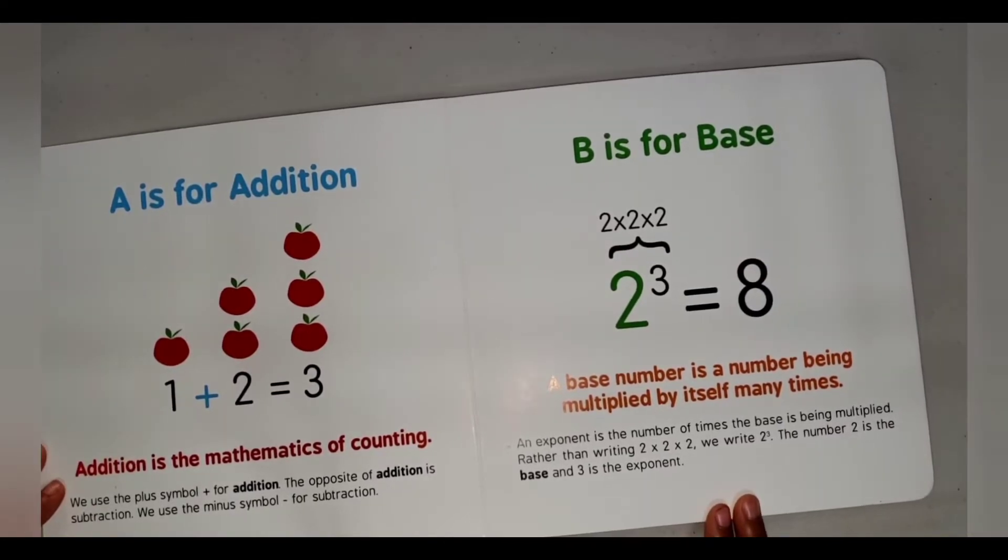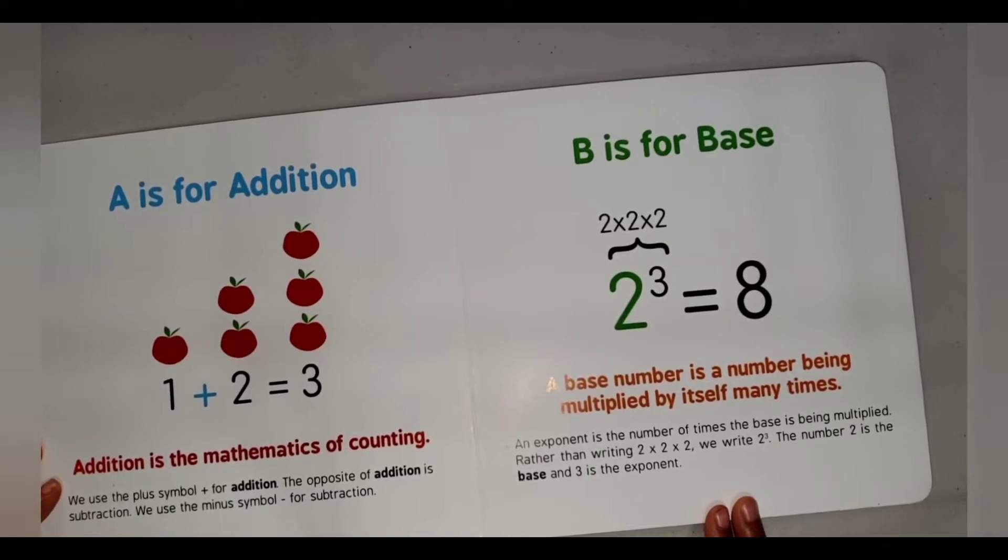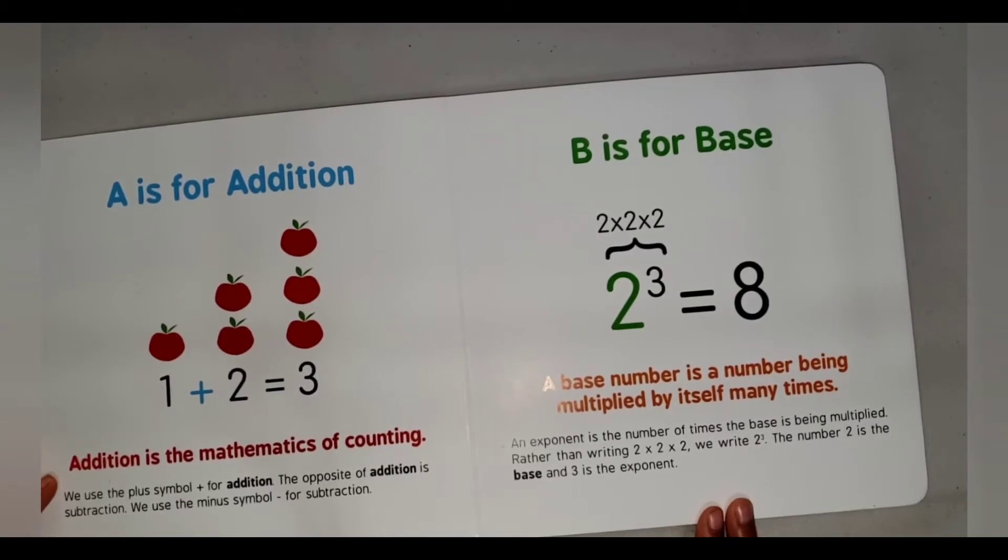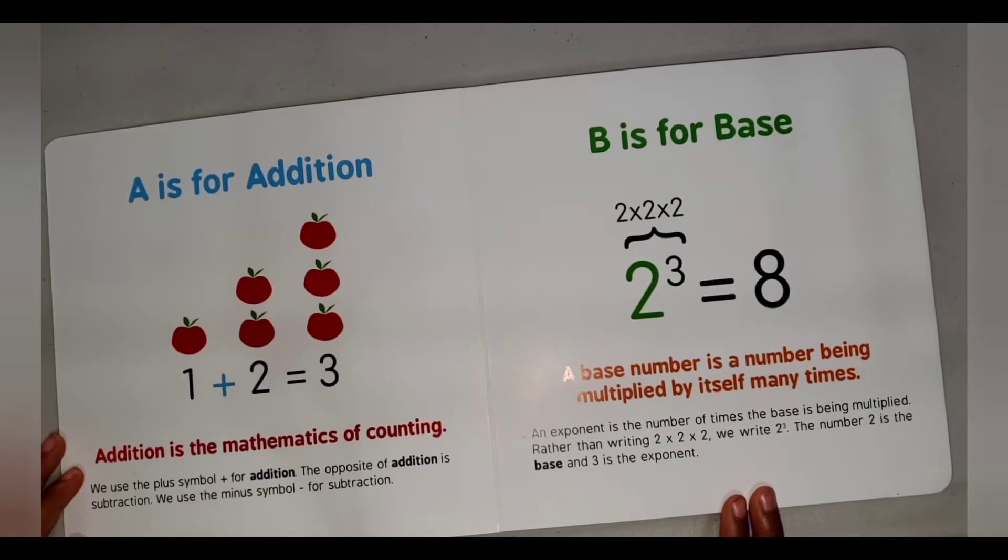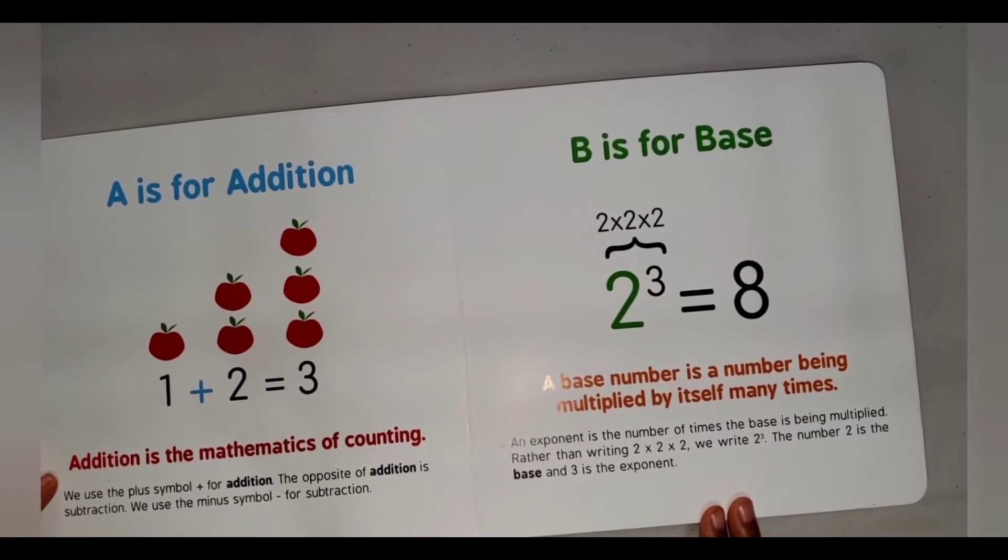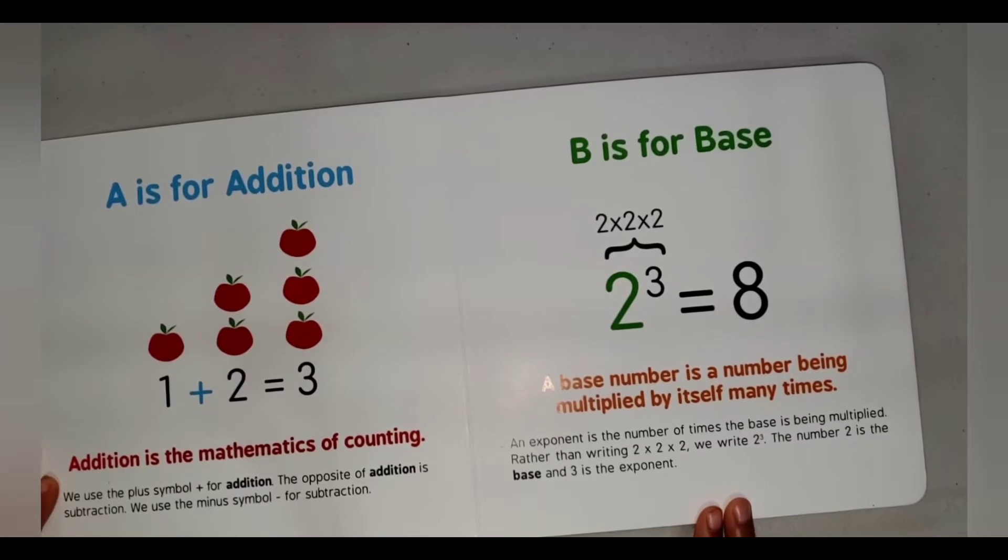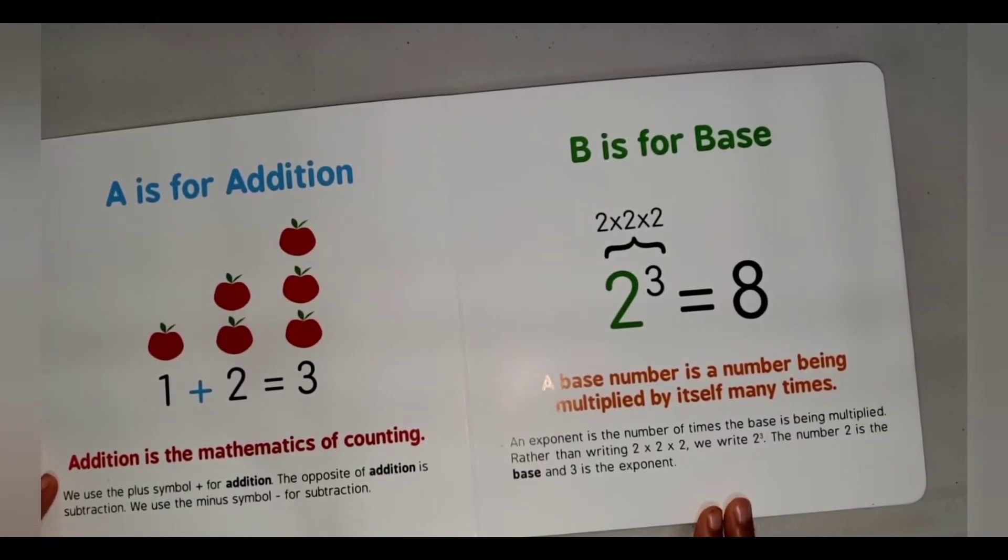B is for Base. A base number is a number being multiplied by itself many times. An exponent is the number of times the base is being multiplied. Better than writing 2 times 2 times 2 times 2, we write 2 to the power of 3. The number 2 is the base, and 3 is the exponent.